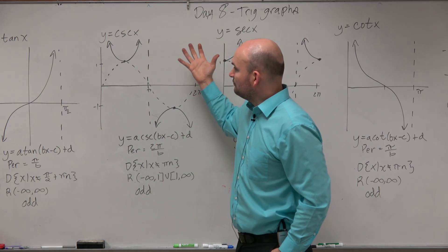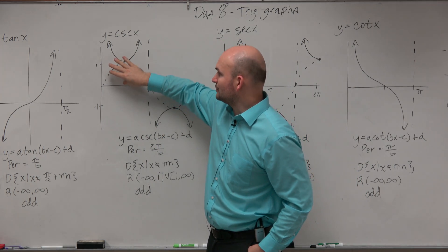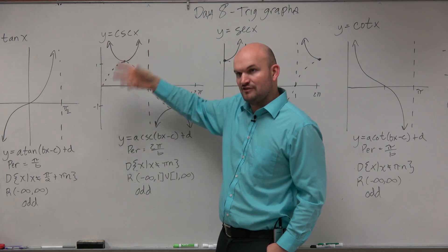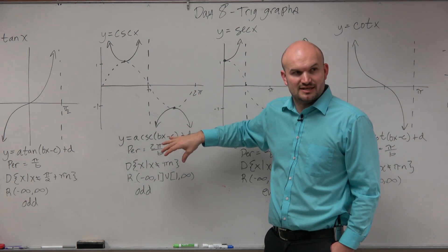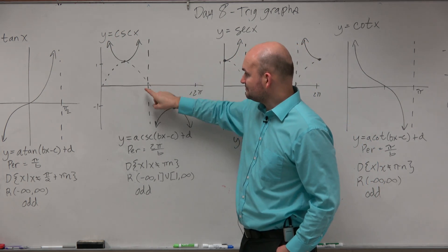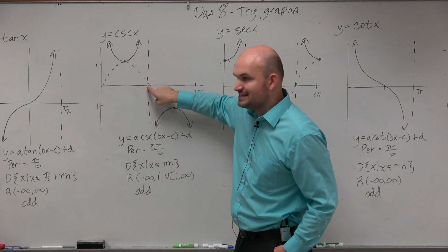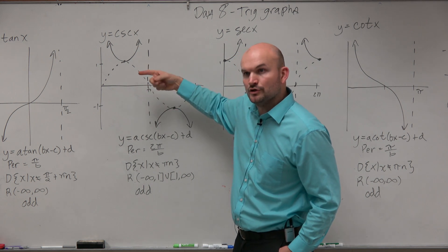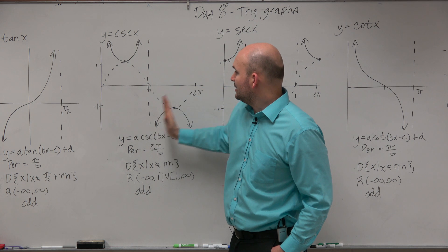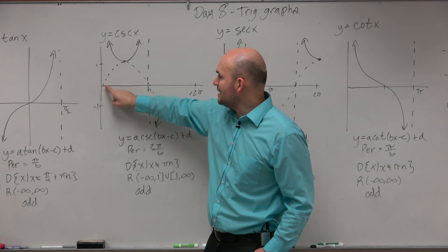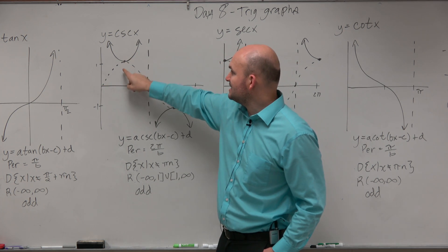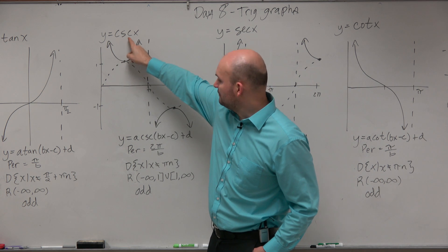So since they're reciprocal functions, you can kind of see how these graphs are related. They're kind of like the mirror image, right? It's kind of like flipped over. And then in addition, if sine is 0 at pi, well, then 1 over 0 would be undefined. So therefore, there's an asymptote. So every single time there's an intercept of sine, that's going to be an asymptote of cosecant.